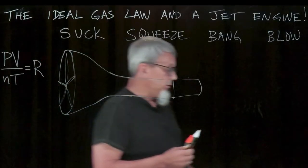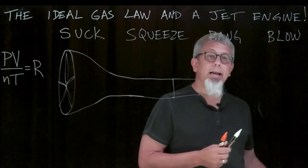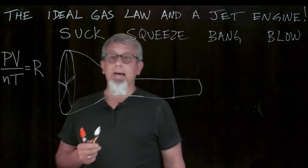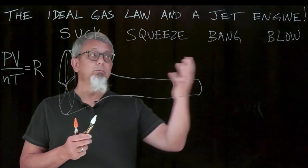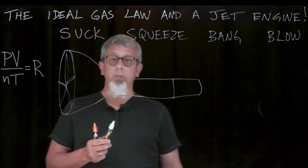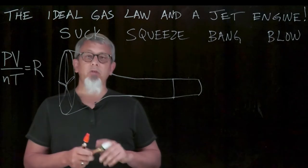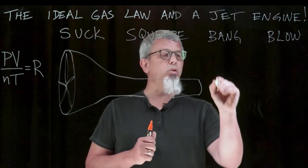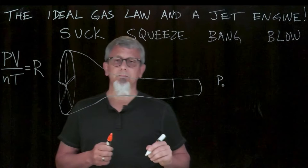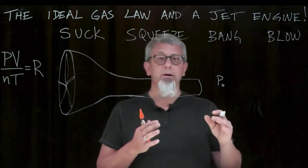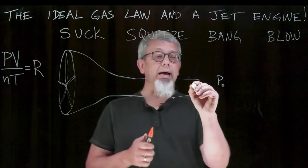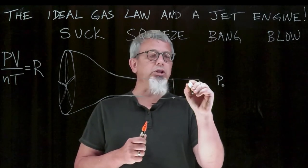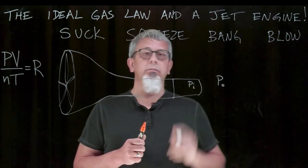So, how do we apply the ideal gas law to the jet engine? Well, here's what we're going to try to do here. At the end of the jet engine, one of the things we want to do is recognize that there's a pressure outside, a P-naught. There's a pressure outside here, and if the jet engine's not turned on and not moving, there's also a pressure inside which is the same as the pressure outside.